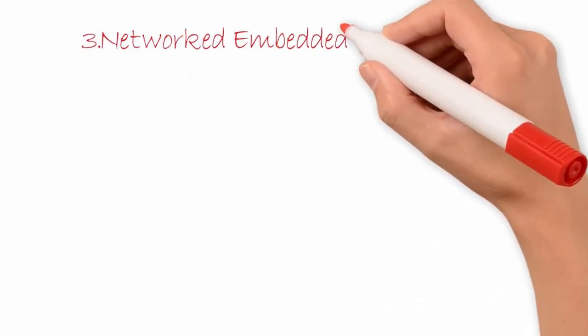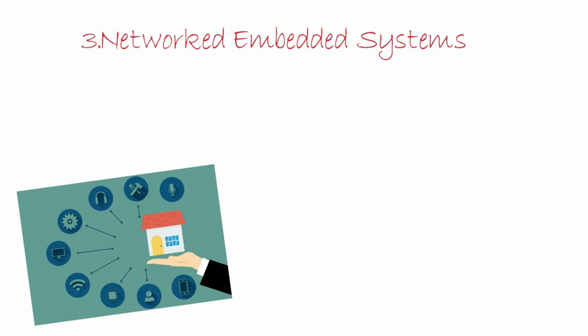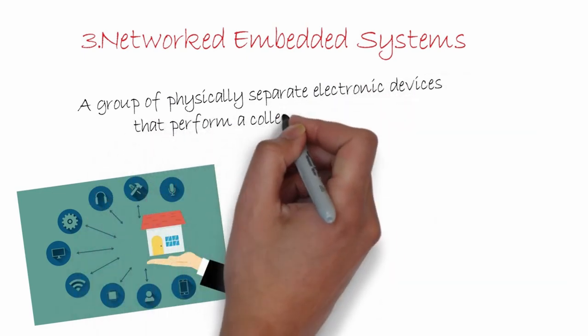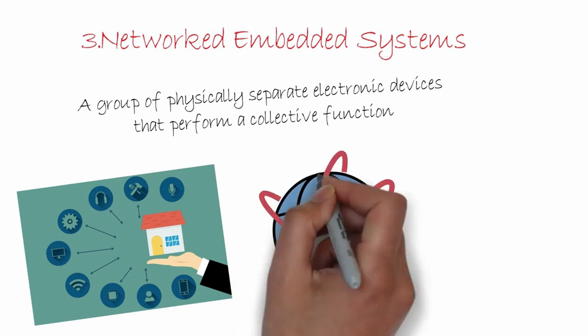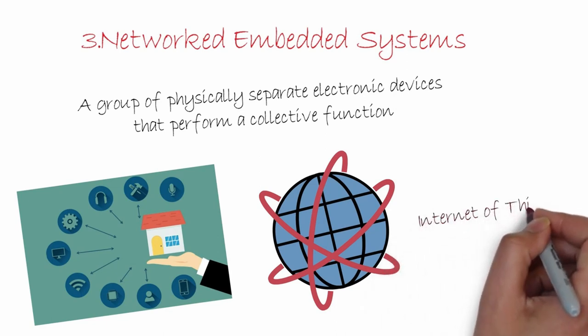Lastly, we have the class called networked embedded systems. A famous example is home automation, where several sensors are placed throughout your home and their collective duty is to perform home automation. This is the latest trend in the field, and more products are being developed in this class, combining electronics, programming, and networking all together. There is a special subclass where the network spans throughout the globe, popularly known as the Internet of Things, or IoT for short.